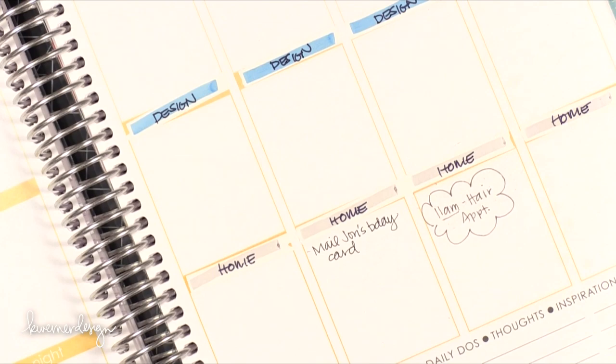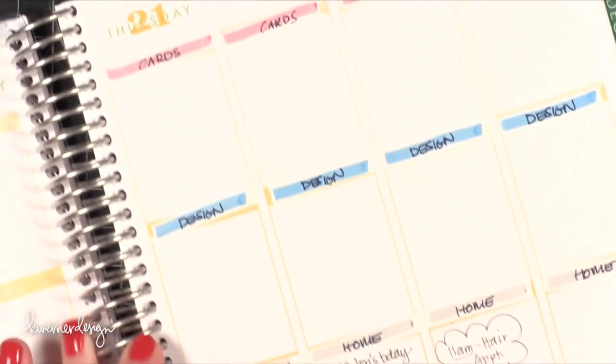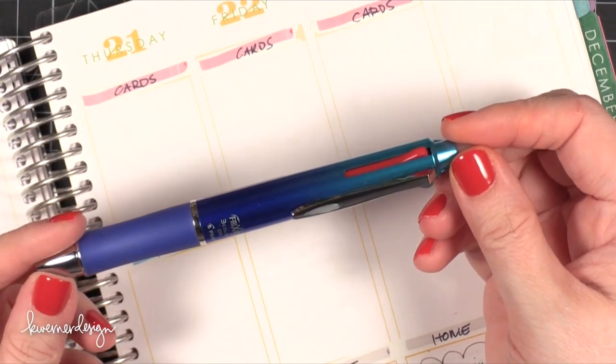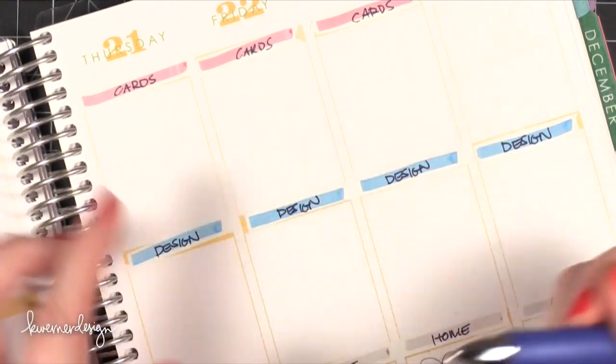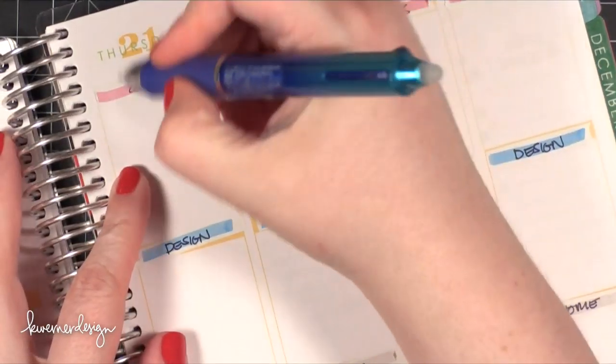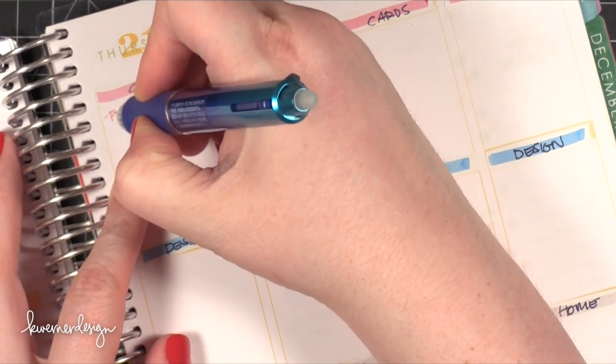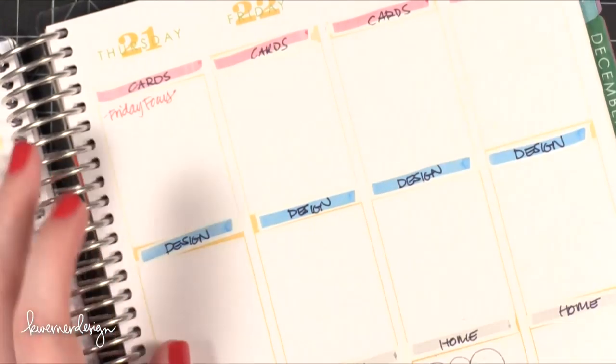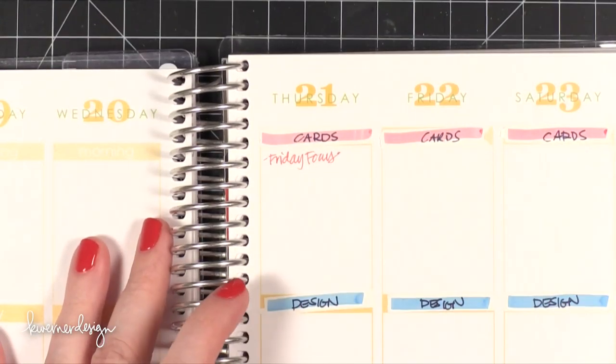So throughout the week as I add things to my to-do list, which is how I basically view this, I'll use my three coordinating colors that are on my Friction Pen. So for this one, I know on Thursday I'll need to work on Friday Focus. So I'll just write in Friday Focus. And let's say I have a plan for it and I'm going to do, I'll probably still be doing Distress Inks.